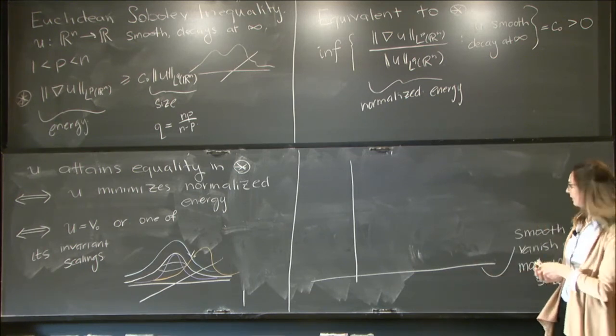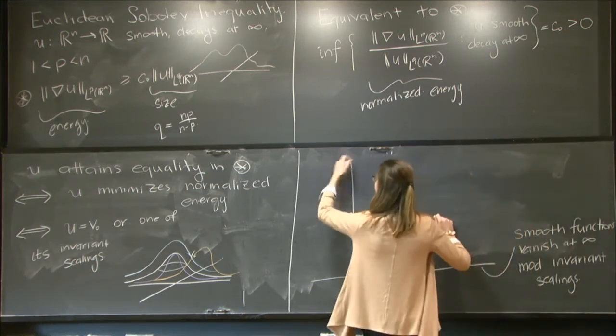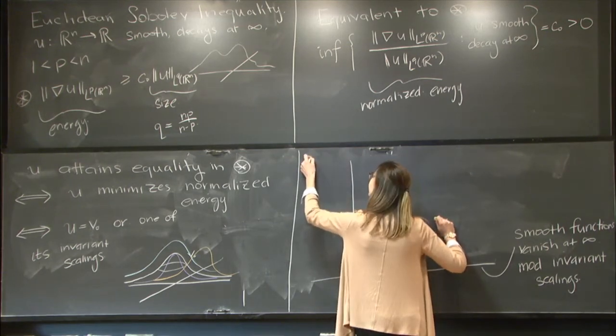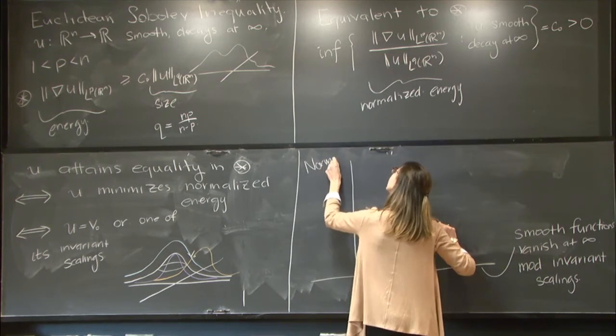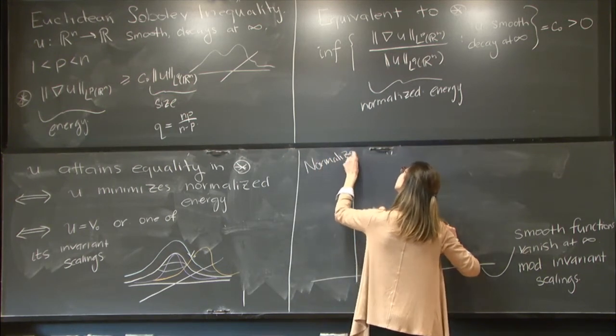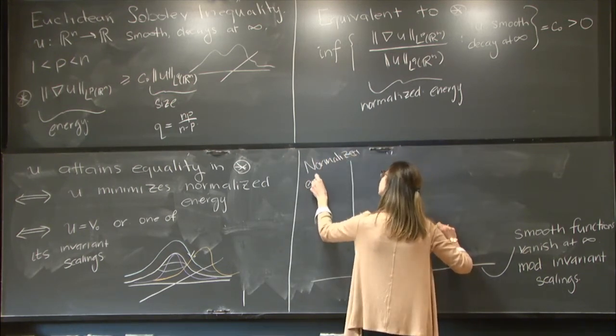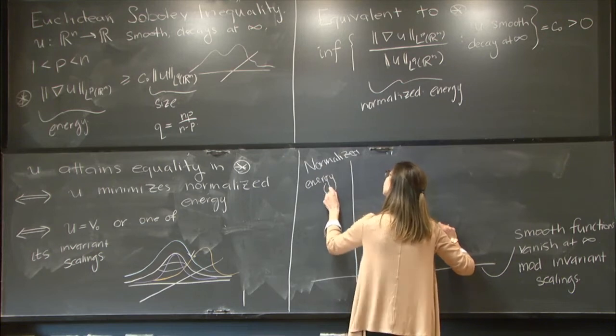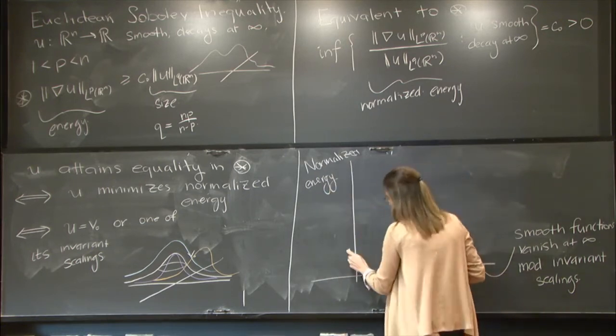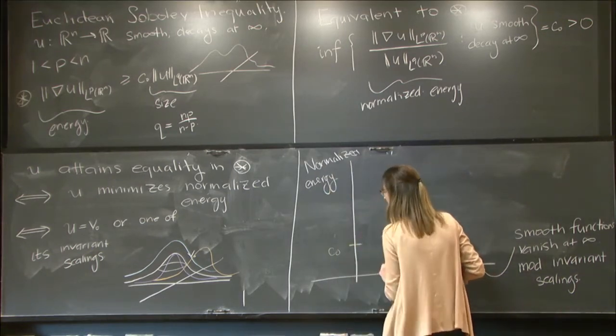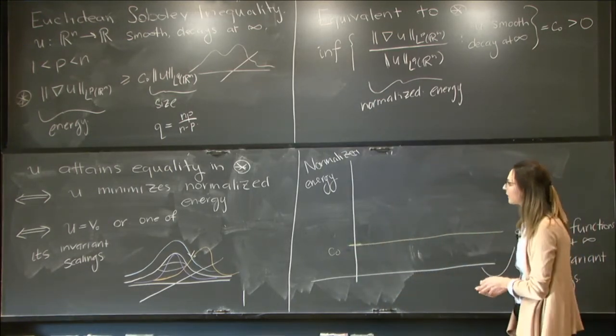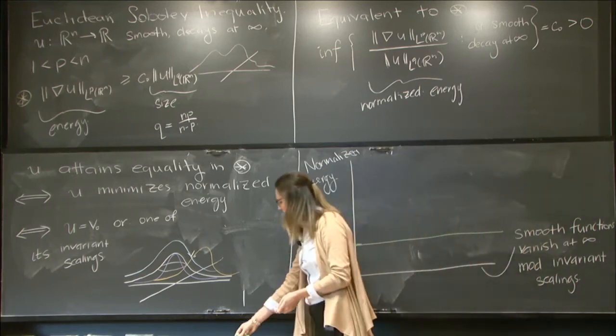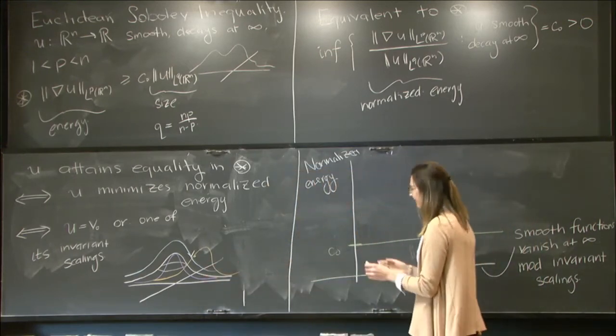So what we know from the Sobolev inequality is if here on the other side, or on the y-axis, I graph the normalized energy. What I know from the Sobolev inequality is that there's this value C0. And this is the global minimum of the energy. And furthermore,